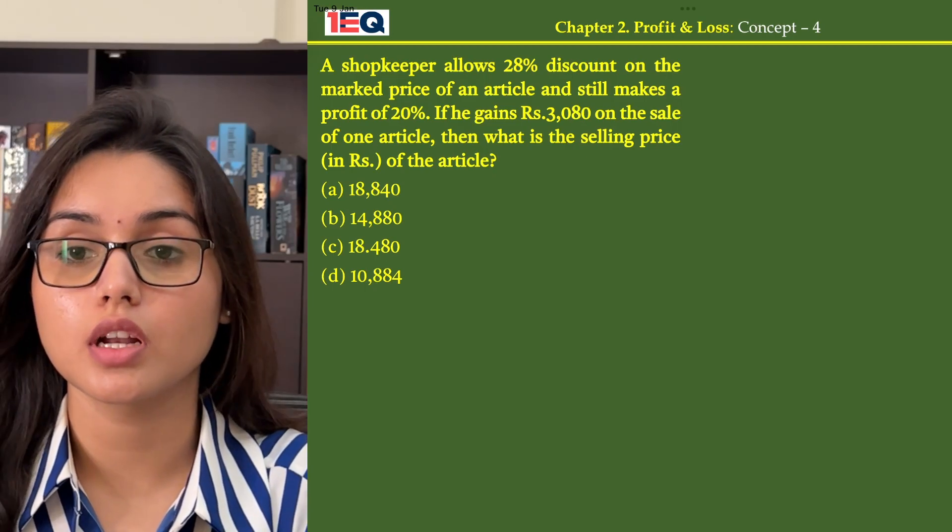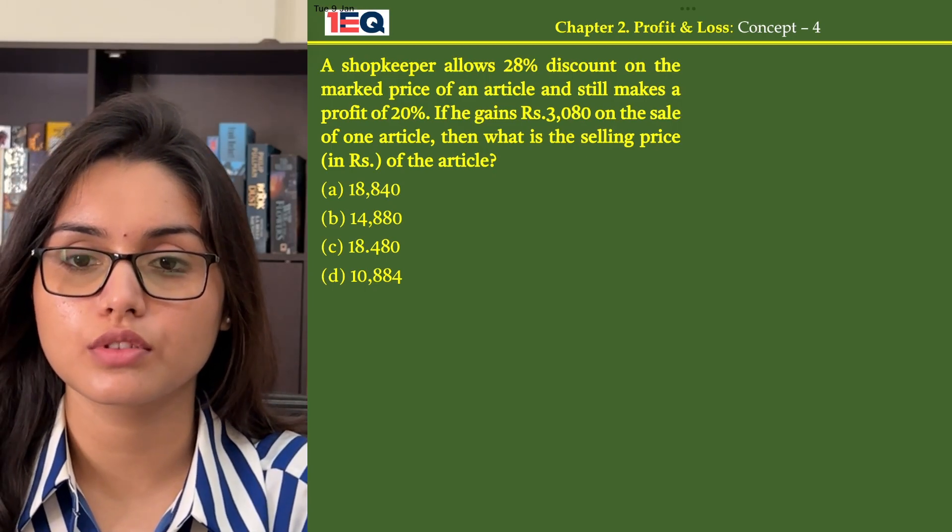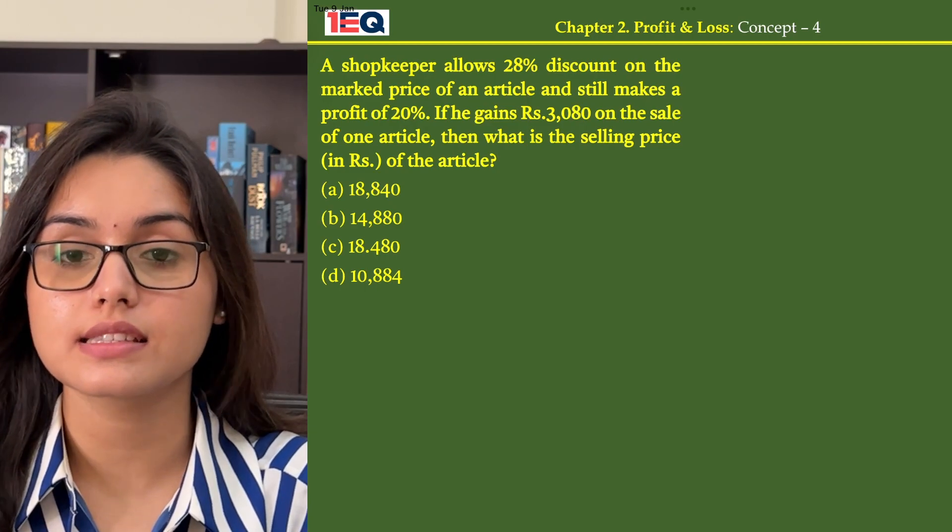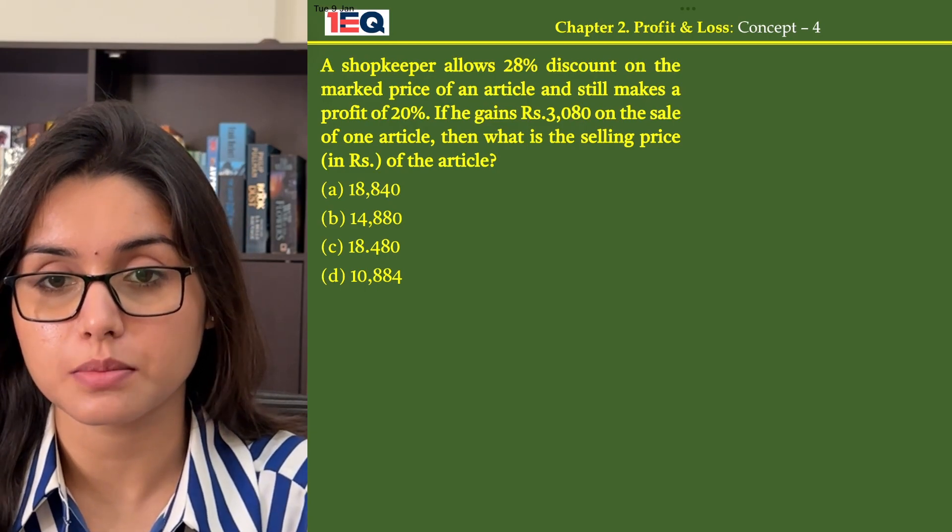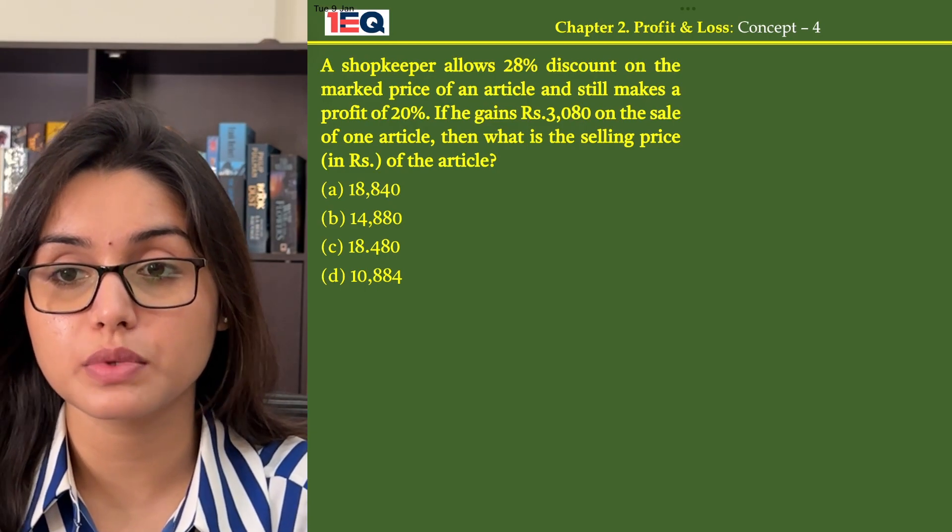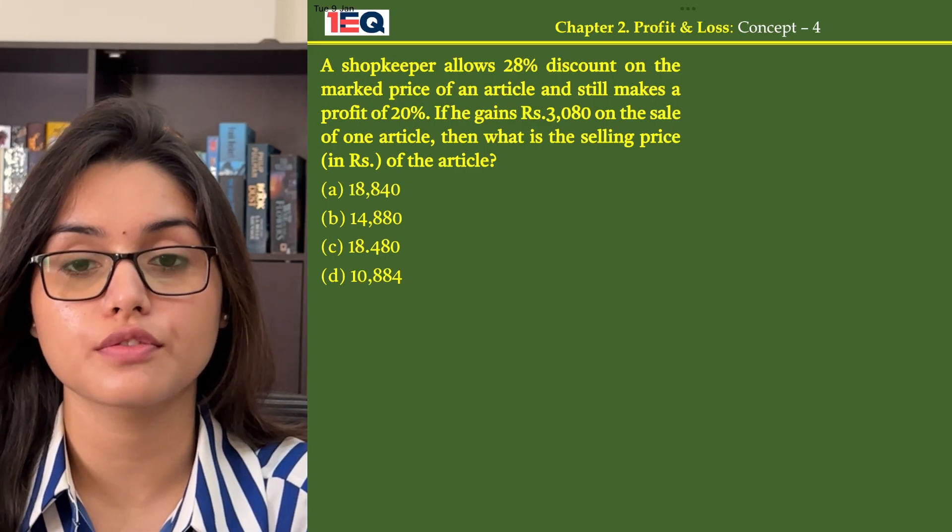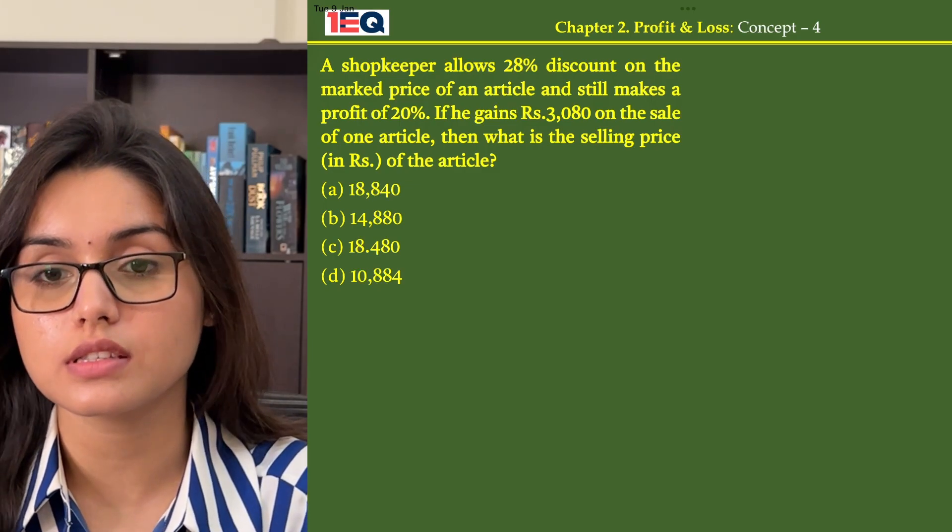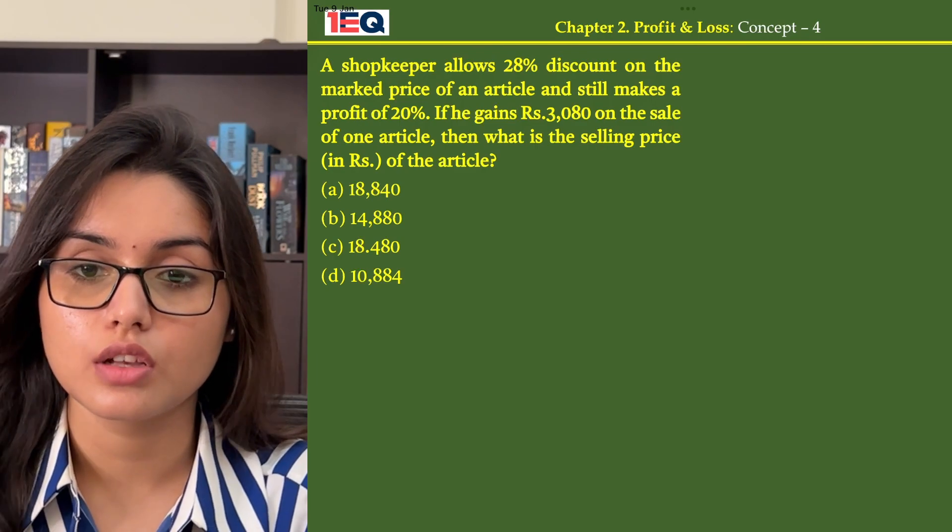A shopkeeper allows 28% discount on the marked price of an article and still makes a profit of 20%. If he gains rupees 3,080 on the sale of one article, then what is the selling price of the article?